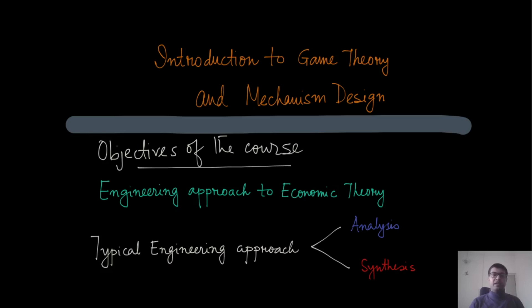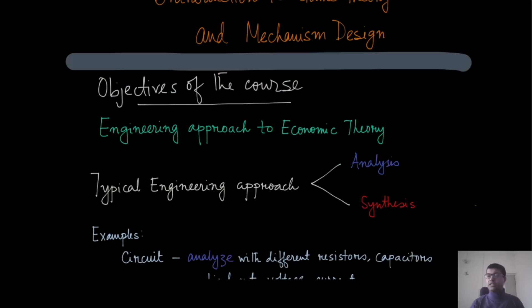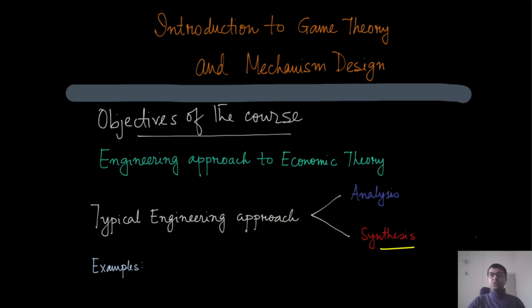Like any typical engineering course, there are two components. One component is an analysis component where you are given the system and you are supposed to analyze that system, and the second part will be to synthesize that system, where you have certain set of objectives that you want to satisfy and you design a system that gives certain desirable outcomes. That is exactly the way mechanism design works. We want to design an institution such that in the presence of conflicting interests you still can satisfy certain good properties.